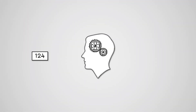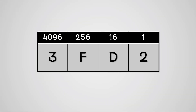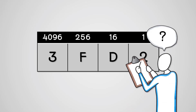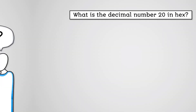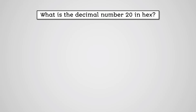So how do we convert a decimal number to a hexadecimal number? To find out the hex value of a decimal number, we follow a similar process to working out the binary. The difference is that now we have to work out how many times the column number will fit into our desired number. We can see how this works by looking at an example.